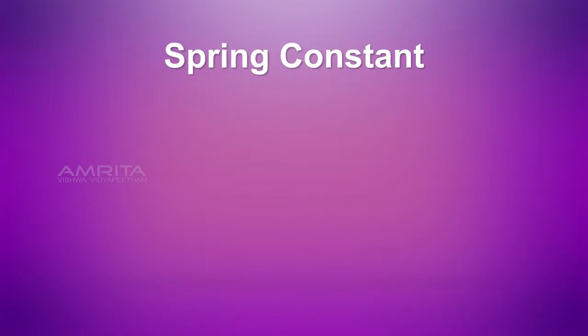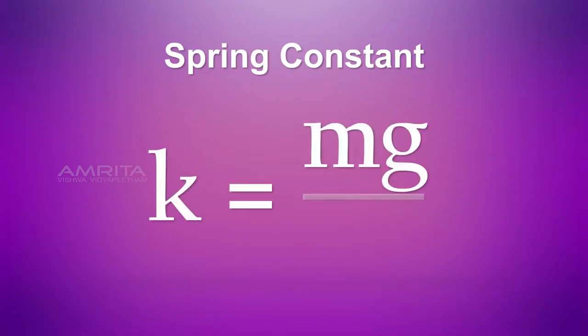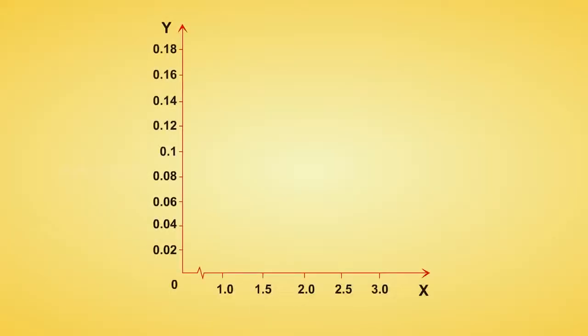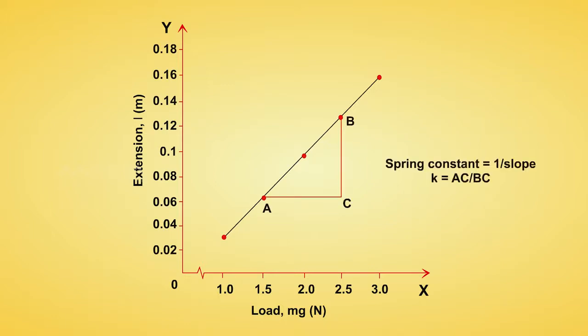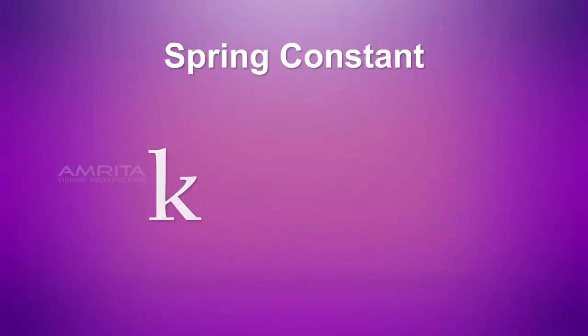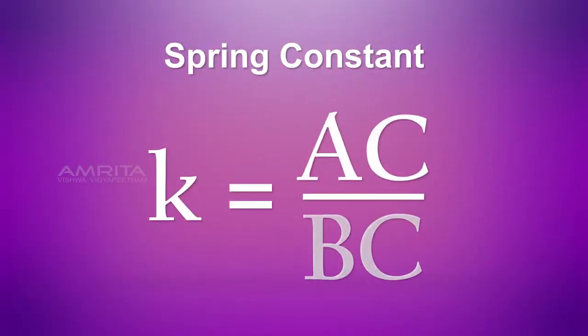The spring constant is calculated using the formula. A straight line graph is obtained. From the reciprocal of the slope of the graph, the spring constant k is calculated, i.e., k is equal to AC by BC.